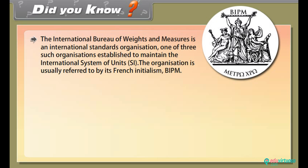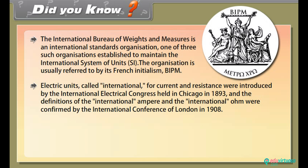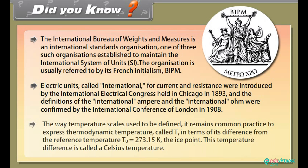Did you know? The International Bureau of Weights and Measures is an international standards organization, one of three such organizations established to maintain the International System of Units (SI). The organization is usually referred to by its French initialism BIPM. Electric units called international for current and resistance were introduced by the International Electrical Congress held in Chicago in 1893, and the definitions of the international ampere and international ohm were confirmed by the International Conference of London in 1908. The weight temperature scales used to be defined. It remains common practice to express thermodynamic temperature (T) in terms of its difference from the reference temperature T0 = 273.15 Kelvin, the ice point. This temperature difference is called a Celsius temperature.